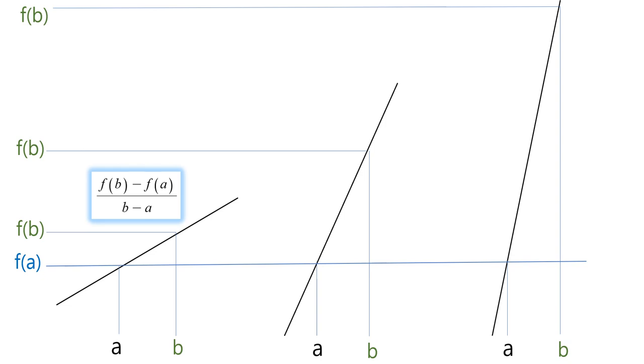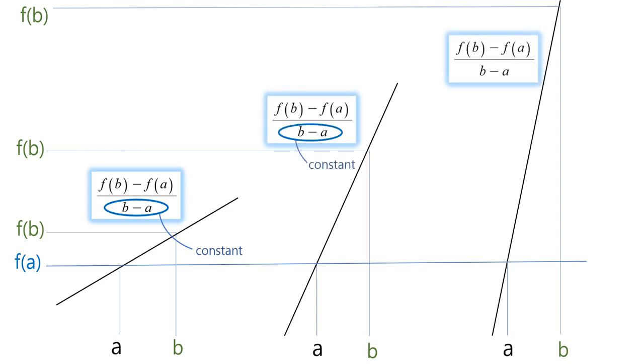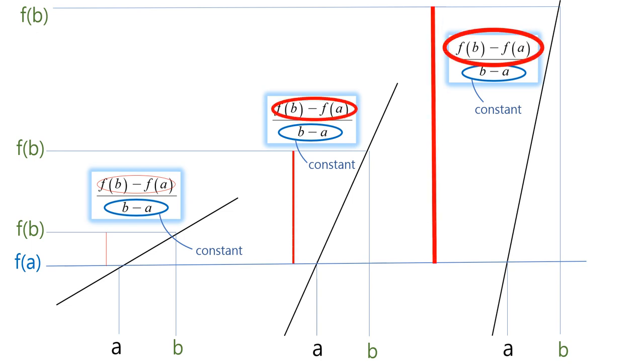Namely, if we put this b minus a as constant amount, same amount, constant. Then we can realize the bigger the numerator is, the more dramatically value of function changes. Like this. Dramatically changes.